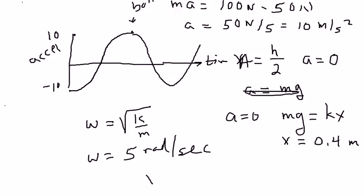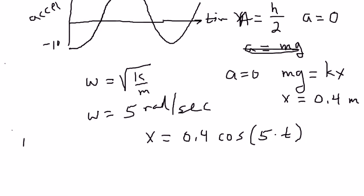So the equation of motion would look like x is equal to 0.4 cosine 5t, and I chose cosine because I'm going to argue that it started out at a maximum displacement.